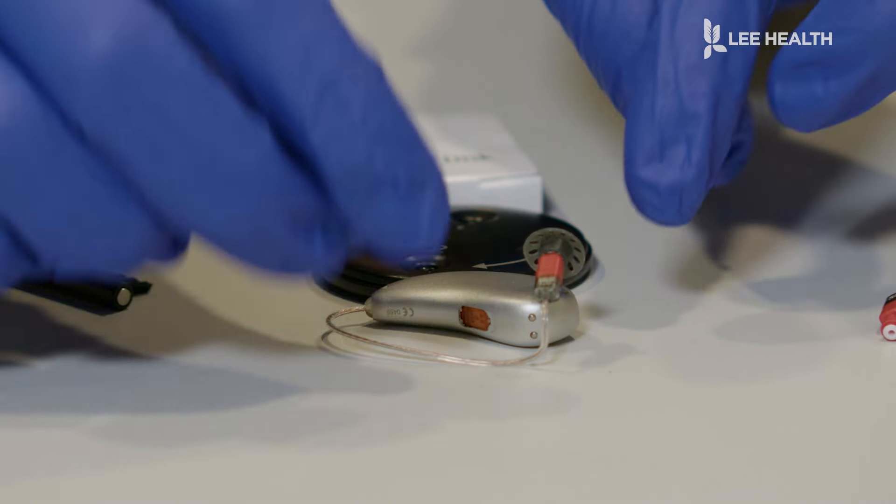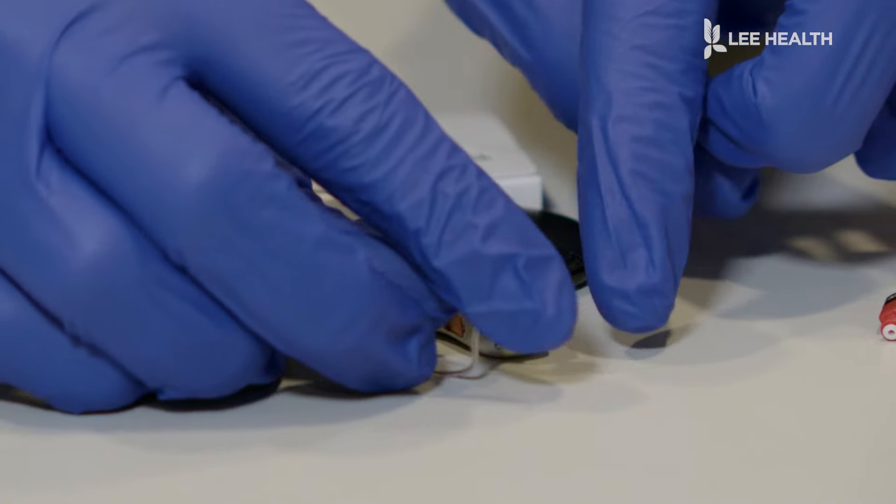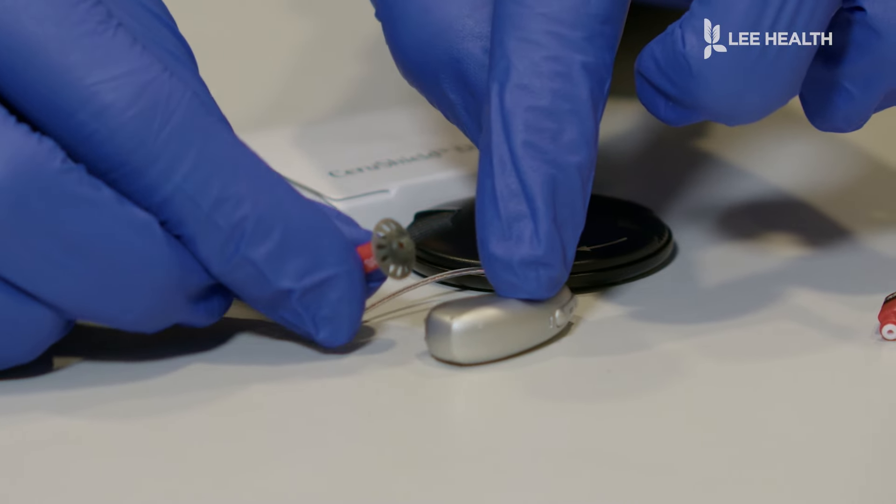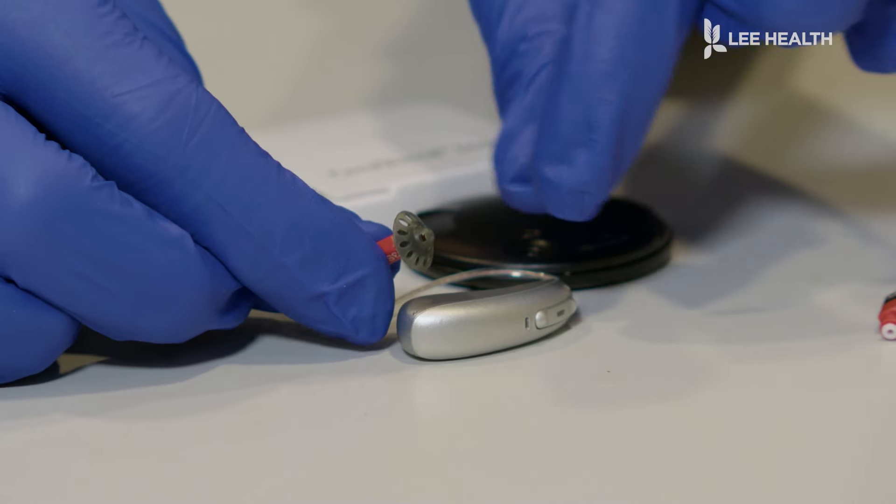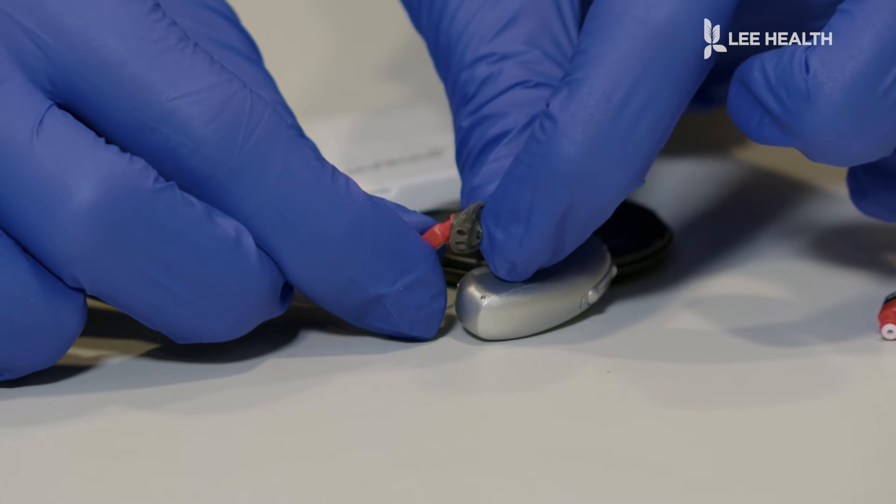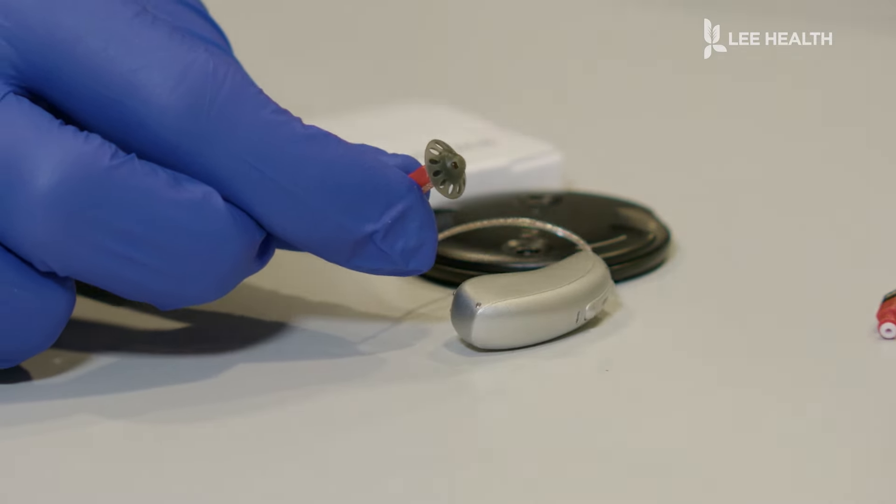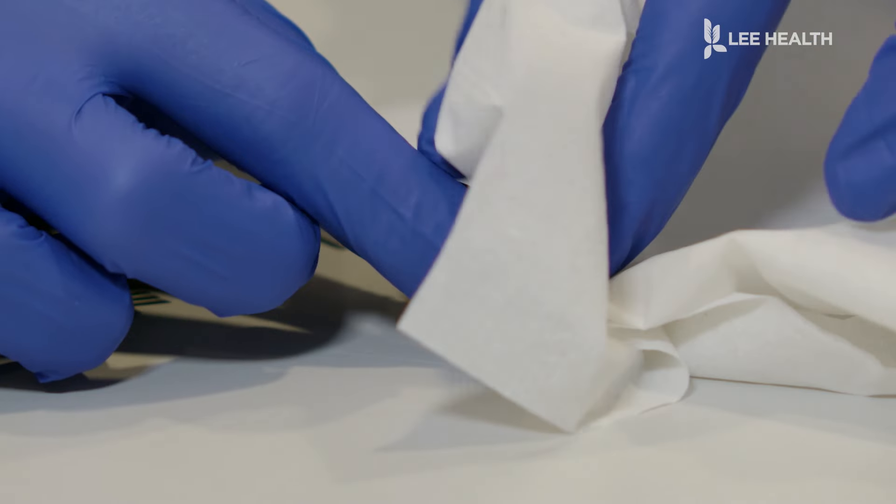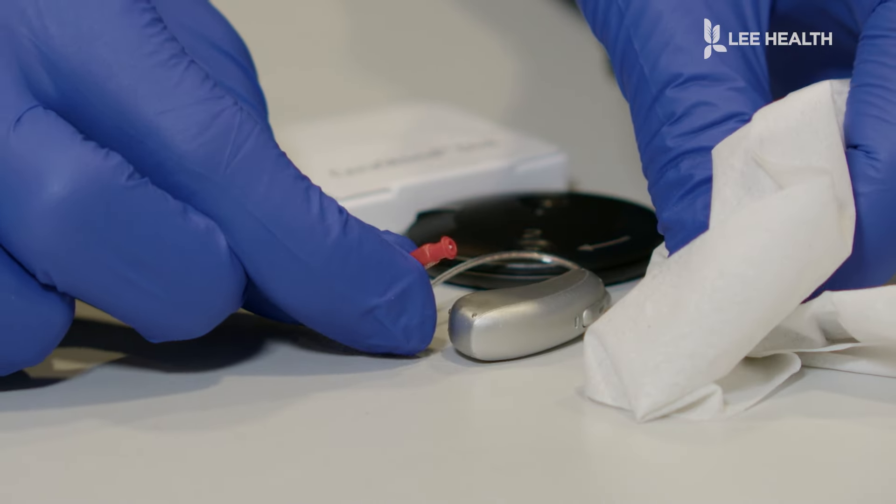Next, we're going to be removing this rubber dome here. So if you can just grip the piece, the end receiver of this hearing aid, and then peel it off and disconnect it like that. If it's hard to grip, you can also grab a tissue, and a tissue can help sometimes grab and remove that piece.